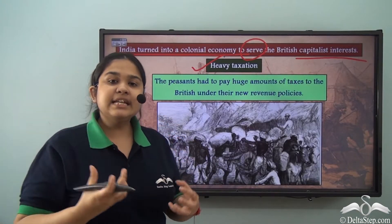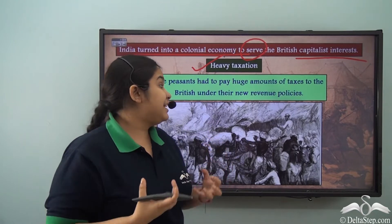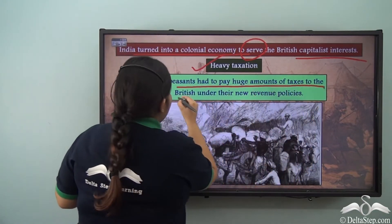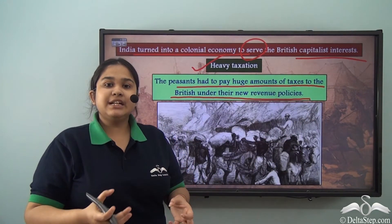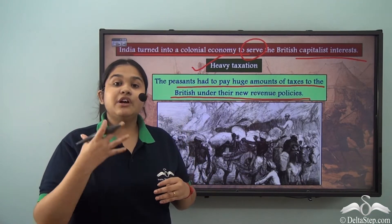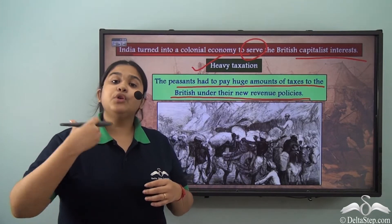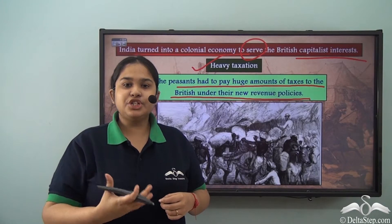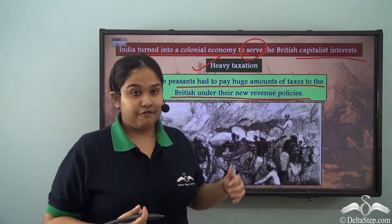The peasants under the British had to pay heavy amounts of taxes. The new revenue policy made these peasants basically labourers without any particular wages who would have to pay up the taxes no matter what. If they could not pay the taxes established by the British, their land holdings would be taken away.